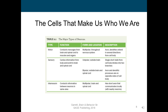When sensory neurons are unipolar, they usually have a single short stalk from the cell body which divides into two branches. When they're bipolar, the axon and the dendritic processes are on opposite sides of the cell body. Finally, interneurons conduct information between neurons in the same area. They are multipolar, found in the brain and spinal cord, and have a very short axon that communicates locally with nearby neurons.